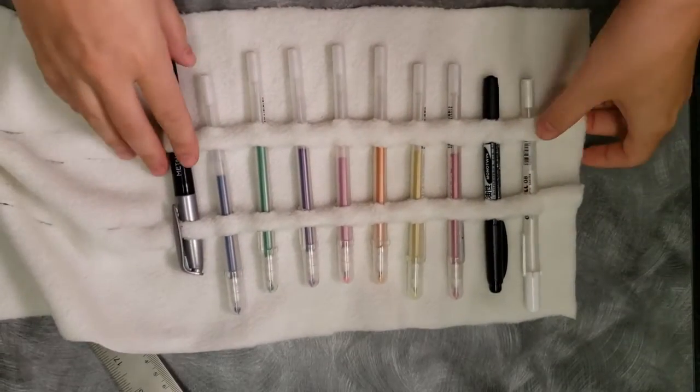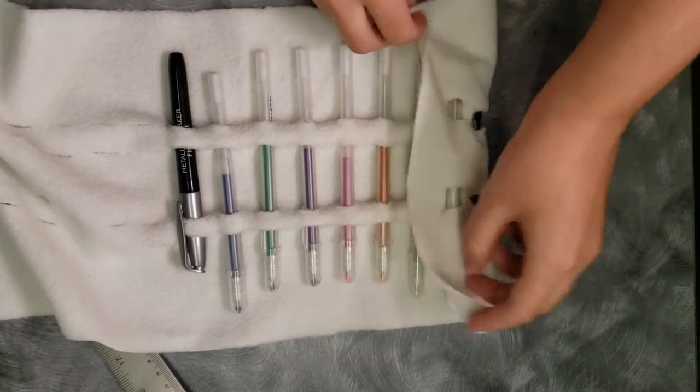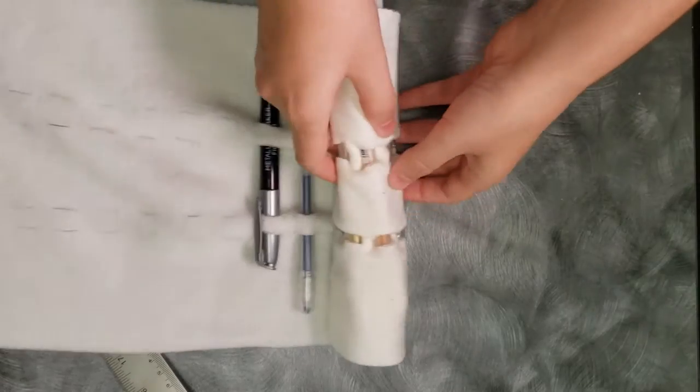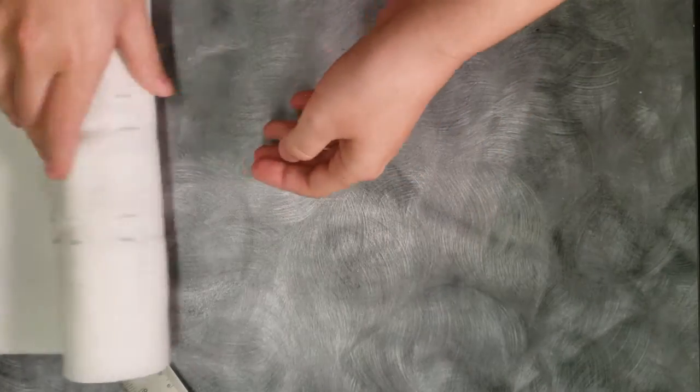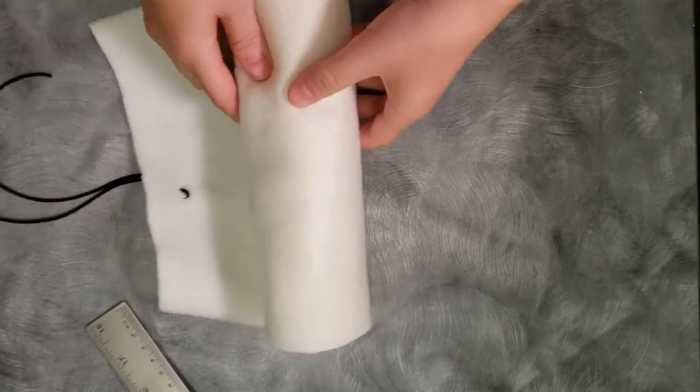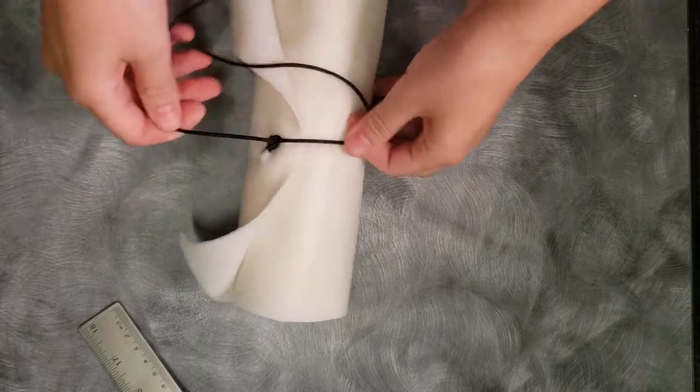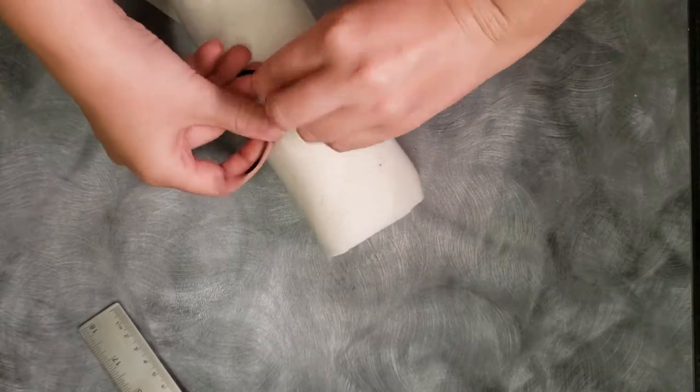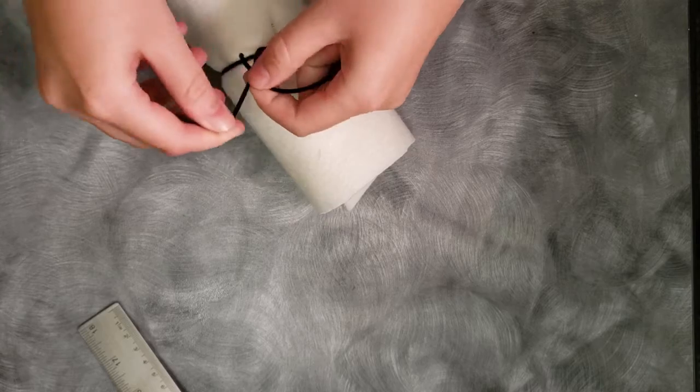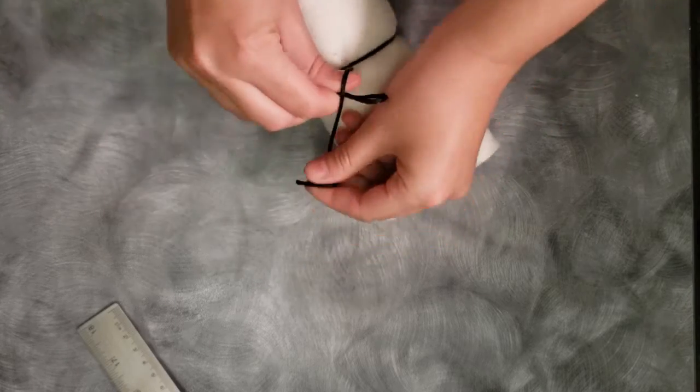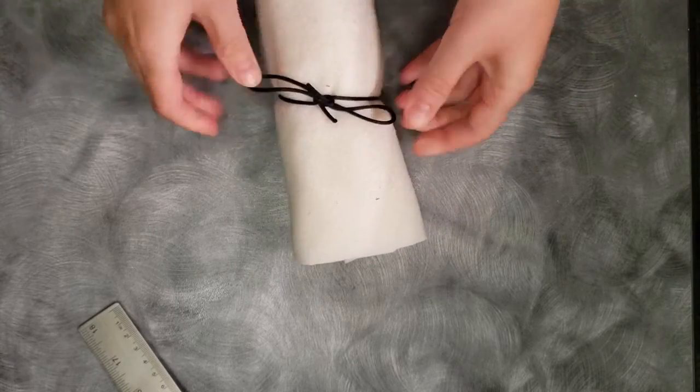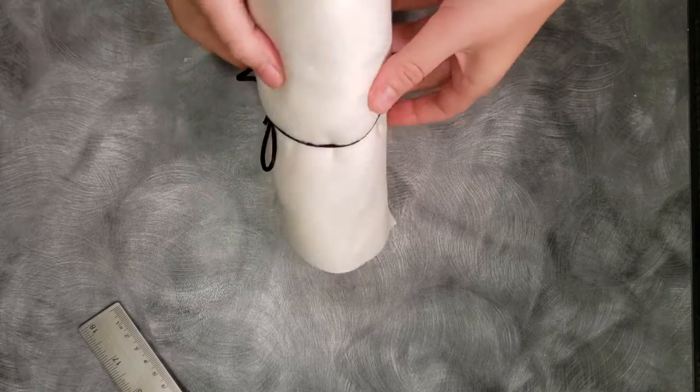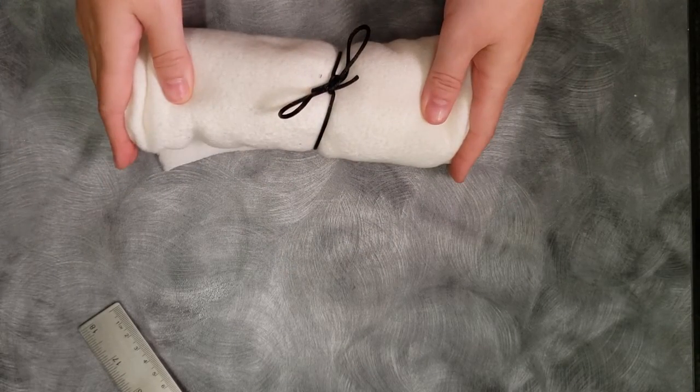This is a nice way to display your pens, and also to clean them up quickly. Once you roll up your roll, you can take your cords, wrap it around, and tie a little bow, and it is good and secure. Until the next time, you want to spread them out and get to work.